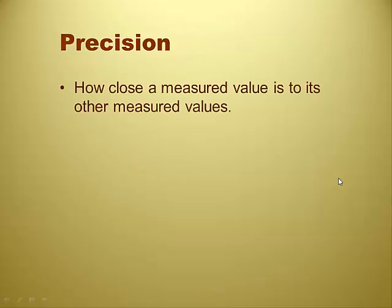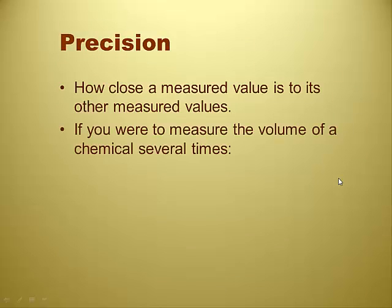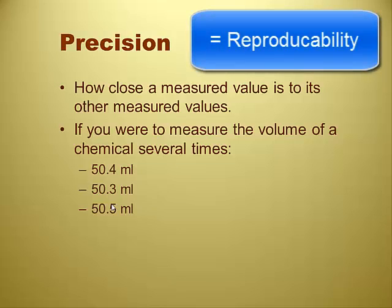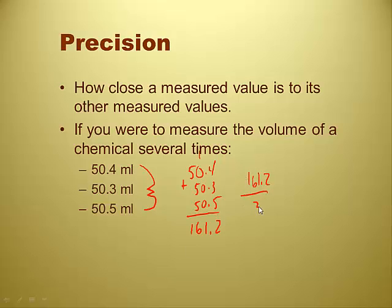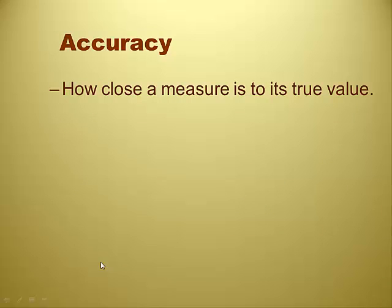Precision. How close a measured value is to its other measured values. If you were to measure the volume of a chemical several times, and fifty point four mils the first time, fifty point three mils the second time, fifty point five mils the third time, all three of them together, that's pretty precise, isn't it? Because they're almost the same thing. That's pretty good, that's pretty decent in a lab. Because what's the average here? You take an average, you add up those three numbers and divide by three. Hundred and sixty one point two. So I take one sixty one point two and I divide that by three, and I get fifty point four.